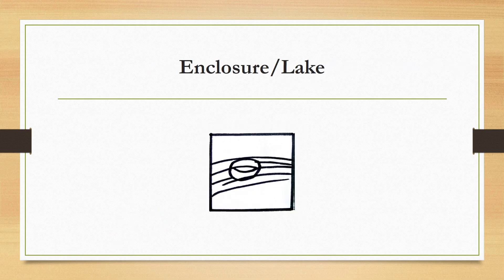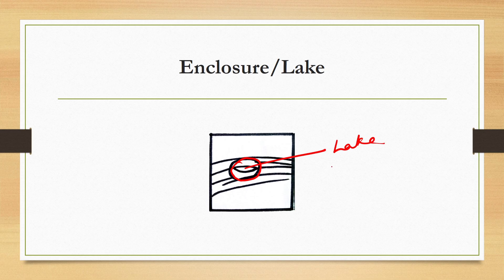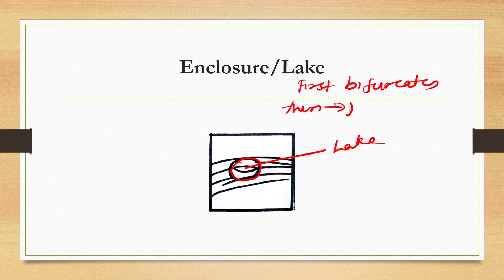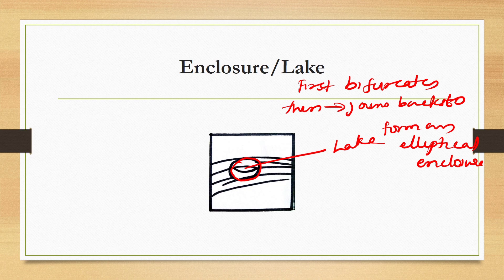Next is enclosure, also called a lake. It is a ridge which first bifurcates, then converges and joins back to form an elliptical enclosure. So the ridge splits and then reconnects, creating an enclosed oval or elliptical shape.